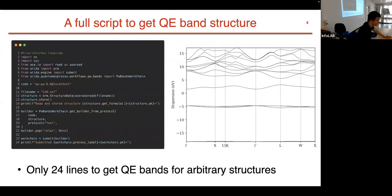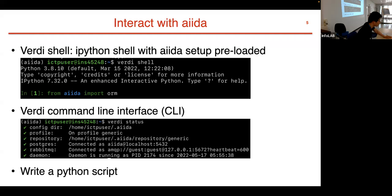Let's look at the submission script for the PW band structure calculation. As you can see from the figure, it's only 24 lines — with these 24 lines you can already get a decent Quantum ESPRESSO band structure. That's the power of AiiDA. We'll go through line by line and cover the three different interfaces to interact with AiiDA: the verdi shell (a customized IPython shell), the verdi command line interface (e.g., verdi status), and Python scripts to launch workflows.